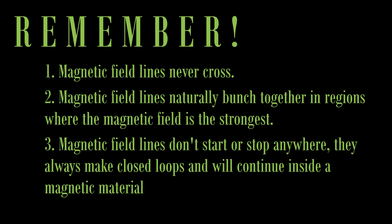There are three things to remember under magnetic field. First, magnetic field lines never cross. Second, magnetic field lines naturally bunch together in regions where the magnetic field is the strongest. And third, magnetic field lines don't start or stop anywhere. They always make closed loops and will continue inside a magnetic material.